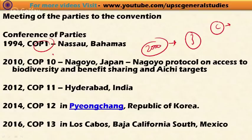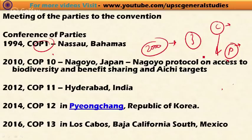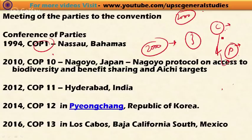To implement the objectives and decisions of this convention, the Conference of Parties decides on particular protocols. A protocol lays down detailed decisions, procedures, and institutional mechanisms that countries must follow to bring the objectives of the convention into reality. This is the difference between a convention and a protocol. In 2000, the Cartagena Protocol on Biosafety was agreed to preserve biodiversity.